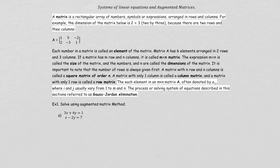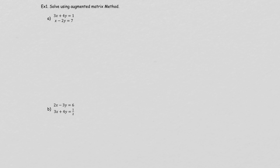Let's see if we're able to solve Example 1 using the matrix system. The first thing you want to do is write it in a matrix — that means get rid of all the variables and just copy down the numbers. So it would be 3, 4, and 1. Then for the second equation, you have 1 for x, negative 2 for y, and 7 for the solution. Remember: the first column represents x, the second column represents y, and the third is the solutions.